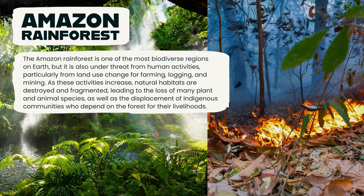One real-life example of land use and habitat destruction is the destruction of tropical rainforests in the Amazon. The Amazon rainforest is one of the most biodiverse regions on Earth, but it's also under threat from human activities, particularly from land use change from farming, logging, and mining. As these activities increase, natural habitats are destroyed and fragmented, leading to the loss of many plant and animal species, as well as the displacement of indigenous communities who depend on the forest for their livelihood. This destruction also contributes to the increase of carbon dioxide in the atmosphere and contributes to global climate change.